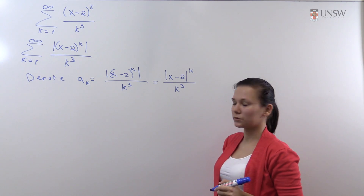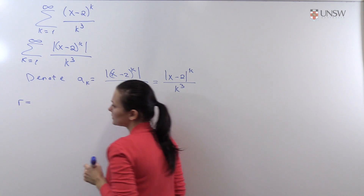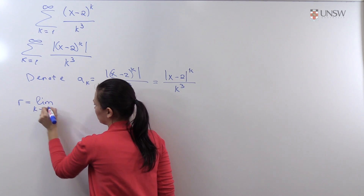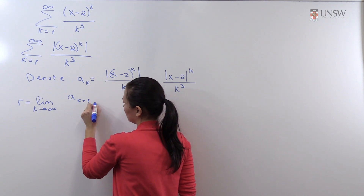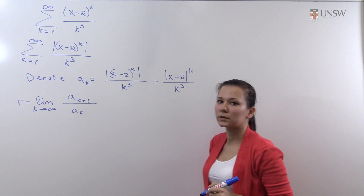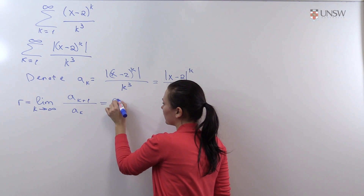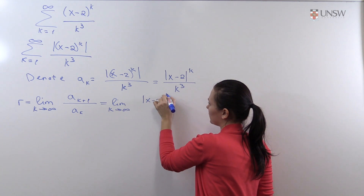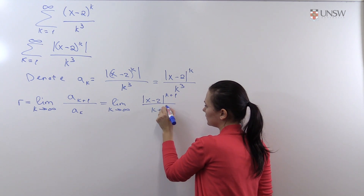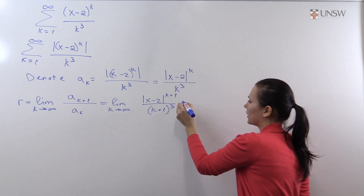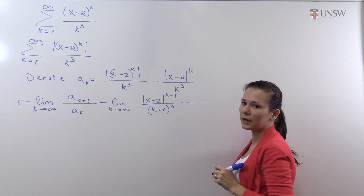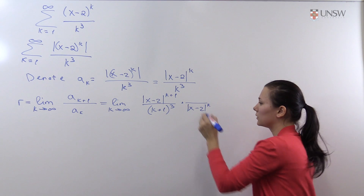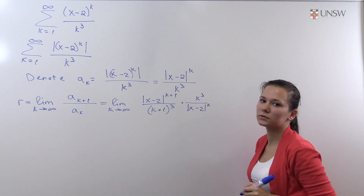Now we will apply the ratio test. The ratio test tells us that we should take the number r, which is the limit as k goes to infinity of a_{k+1} over a_k. So in this case we will have the limit as k goes to infinity of |x minus 2|^{k+1} divided by (k+1)^3, over a_k, which has |x minus 2|^k in the bottom and k^3 in the top.